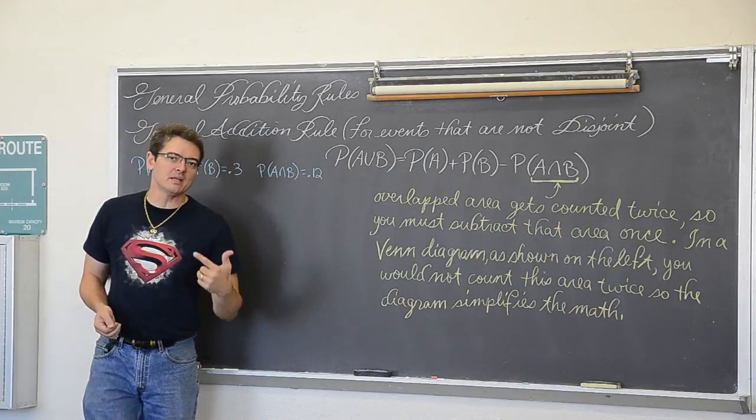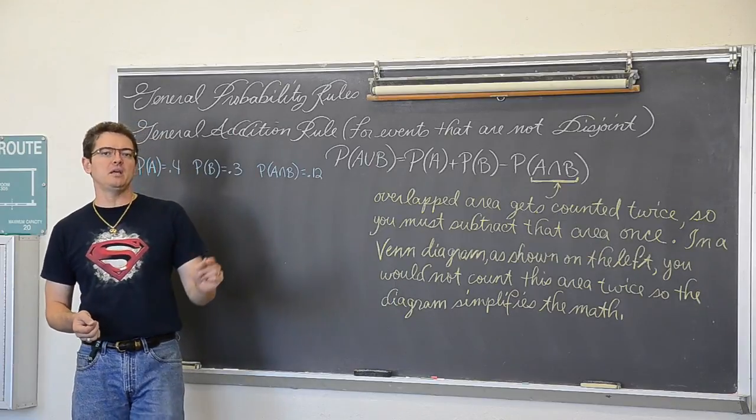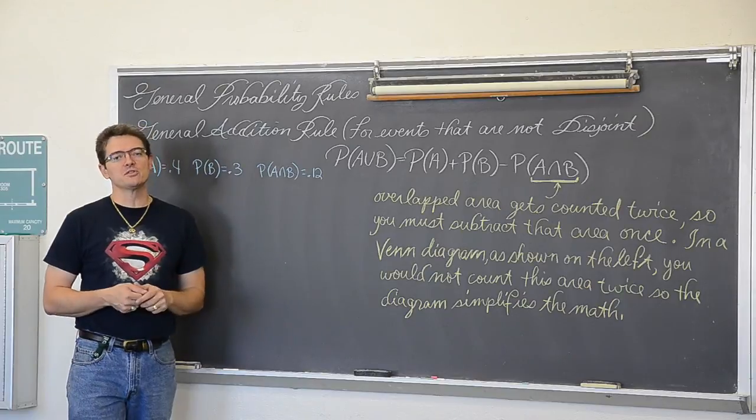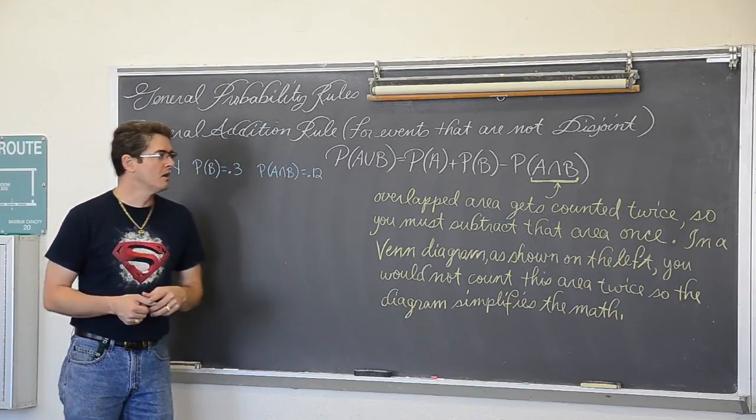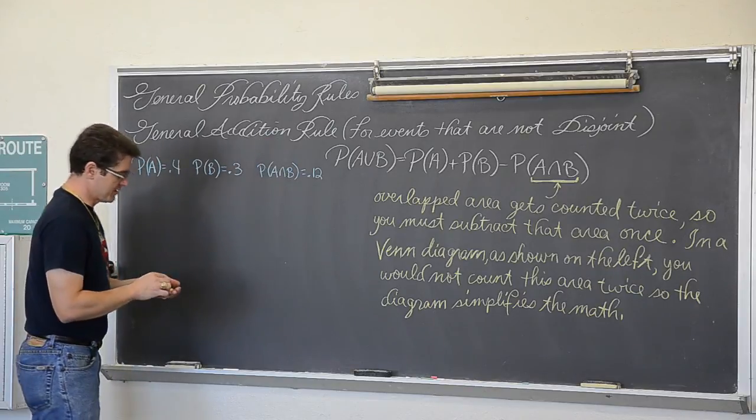You know how we say like or means add, but that is only if the events are disjoint. The probability of A or B equals the probability of A plus the probability of B if it is impossible for those two events to occur together. Well if it is possible for them to occur together we need the general addition rule.